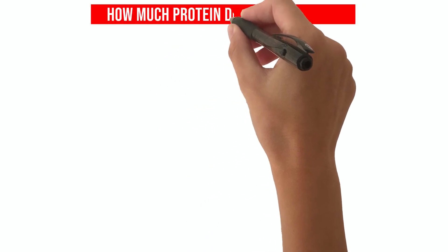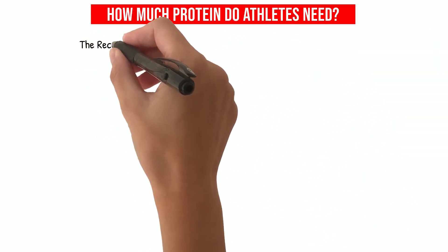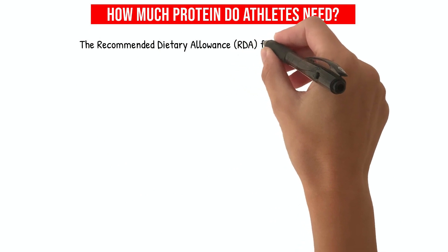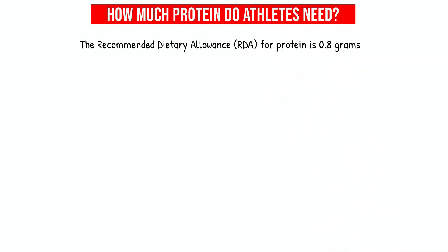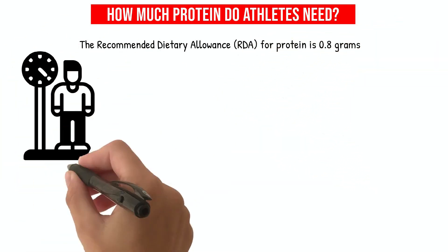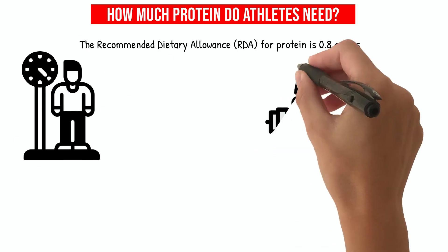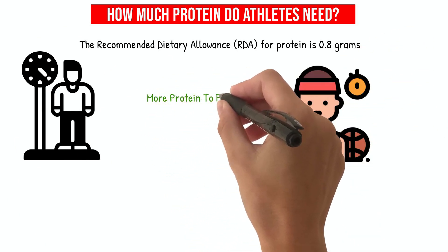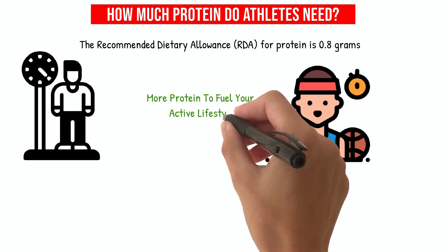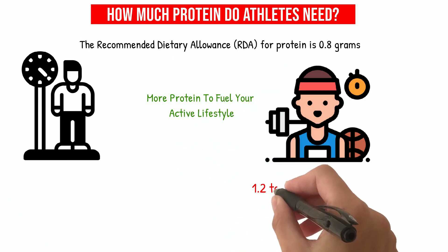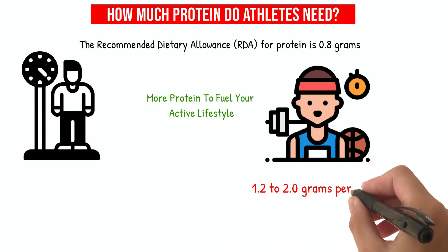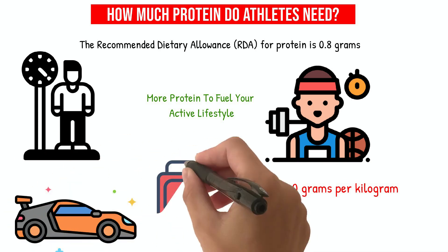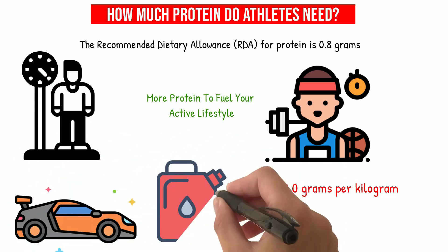How much protein do athletes need? The recommended dietary allowance (RDA) for protein is 0.8 grams per kilogram of body weight per day. But athletes need more protein to fuel their active lifestyle — about 1.2 to 2.0 grams per kilogram. This is like filling up a high-performance car with premium fuel.